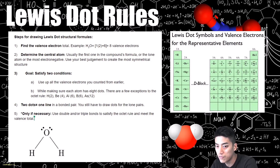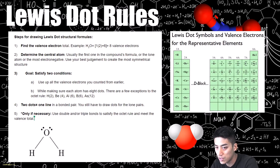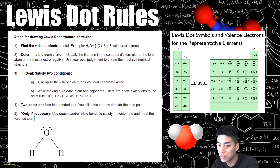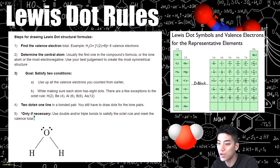Rules four and five I've kind of explained already. If you want to clean up your structure — like how the Lewis dot structure for water looks — you can use solid lines to represent bonded pairs of electrons. I'm just laying down some ground rules before we start doing these as examples.